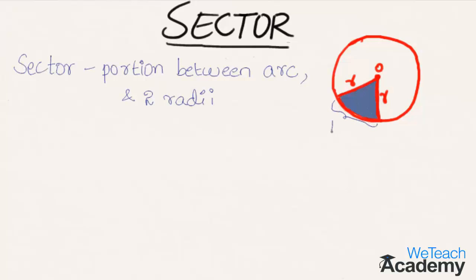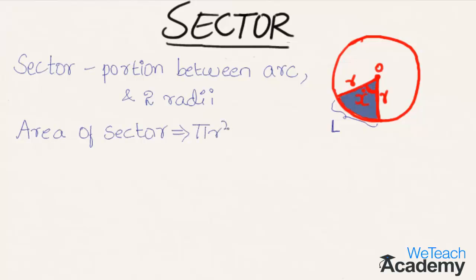Here L represents the length of the arc. The area of sector is given by multiplying the total area of the circle, that is pi R squared, with the ratio of the length of the arc to the total perimeter 2 pi R. We get the area of sector as L R by 2.